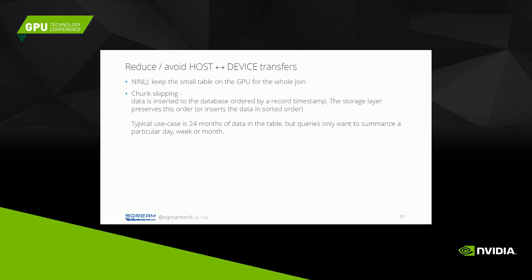Another good optimization is to avoid host-device transfers wherever possible. For a non-index nested loop join, if a chunk from the big table and the entire small table fit on the GPU simultaneously, we should leave the small table on the GPU for the whole join. Another idea involves metadata and chunk skipping: if data is inserted in timestamp order, such as log data, the storage layer can maintain that order, and queries on specific days can skip most of the data without even loading it from disk.